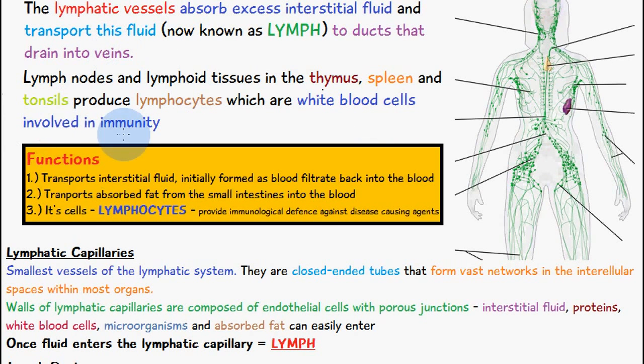Let's talk about the functions of the lymphatic system. Number one, it transports interstitial fluid initially formed as blood filtrate back into the blood. It also transports absorbed fat from the small intestines into the blood. And thirdly, lymphocytes produce the immunological defense against disease-causing agents. Those are the three main functions of the lymphatic system.